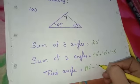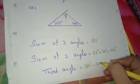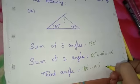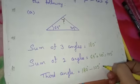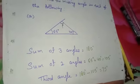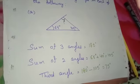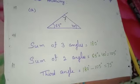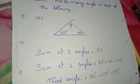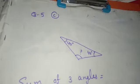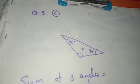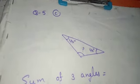So the third angle is 180 minus 105 degrees, which equals 75 degrees. This completes part A. Now let's start part C. A triangle is given with two of its angles as 40 degrees and 40 degrees, and we need to find the third angle.